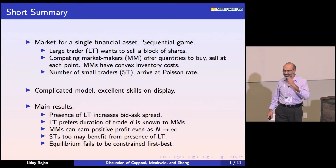One result that Albert didn't mention — this is Lemma 6, we saw Lemma 5 but not Lemma 6 — is that even as N goes to infinity, these market makers competing in Cournot fashion can earn positive profits when the large trader is there. The short-term traders, the small traders, might benefit from the presence of the large trader. And the equilibrium fails to be constrained first best.